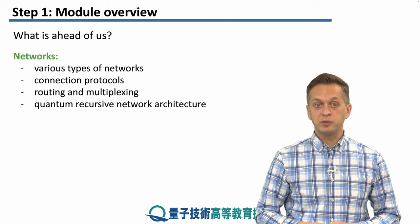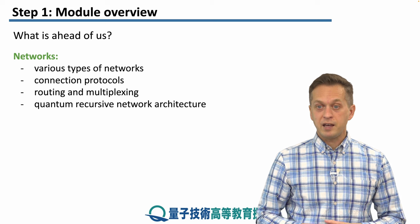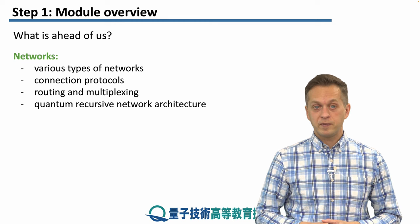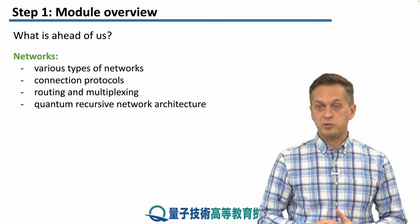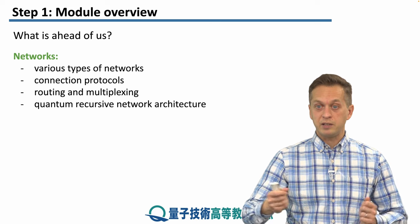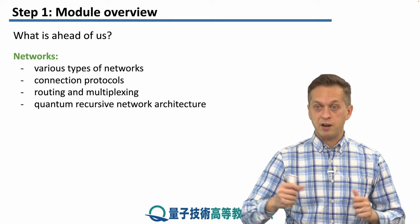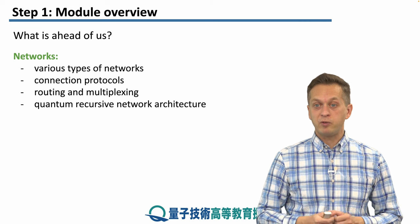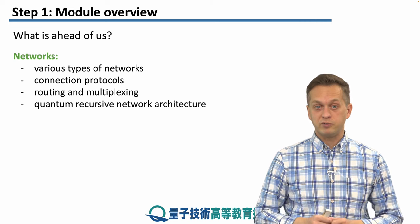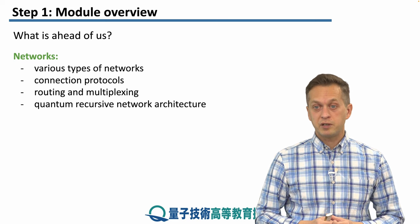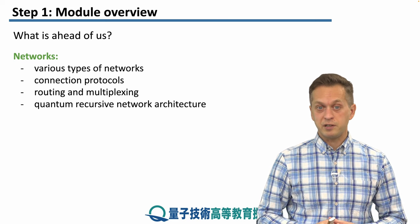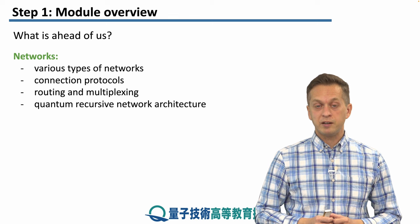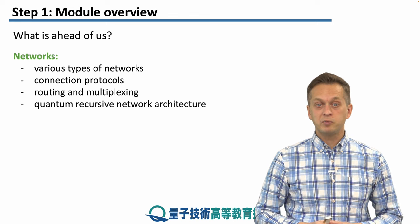Then we're going to move on to networks — there will be four lessons. In the first one, we will look at various types of networks, from very small to global and very large networks. In the second lesson, we will think about connection protocols: how do we connect different nodes in the network, and what needs to happen for them to share end-to-end Bell pairs and become entangled? Then we will move on to how we can route information and how multiple users can make use of network resources — we will talk about multiplexing. Finally, we will bring everything together when we talk about quantum recursive network architecture.